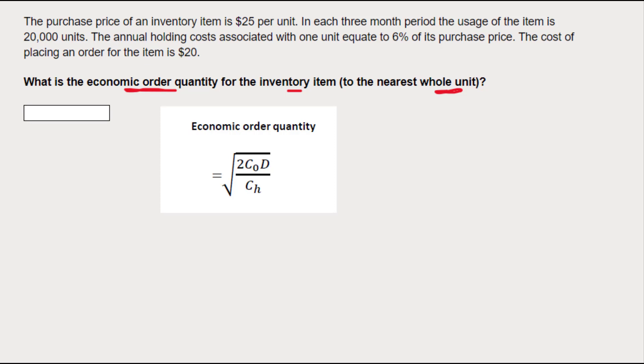The economic order quantity is the square root of two times CoD on chips - CoD over Ch. I can remember it really easily, who can't remember cod on chips - but you need to know what each of the symbols stand for.